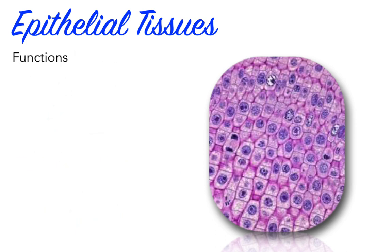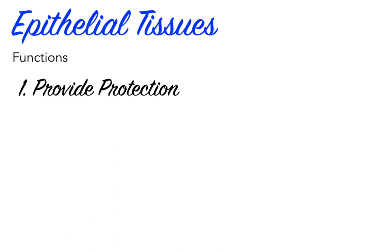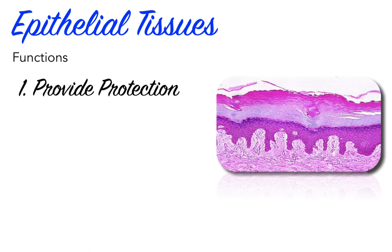Now let's move on to our next question: what do epithelial tissues do? Epithelial tissues perform a number of distinct functions depending on their location in the body. Here are four essential functions: they provide physical protection, they control permeability, they provide sensation, and they produce specialized secretions. Epithelial tissues provide physical protection because, being exposed to external surfaces and internal chambers, epithelia protect these surfaces from friction or abrasion, dehydration, and destruction by chemical or biological agents. The protective role is clearly evident in the skin, which resists impacts and scrapes, restricts water loss, and prevents bacteria from invading the body.